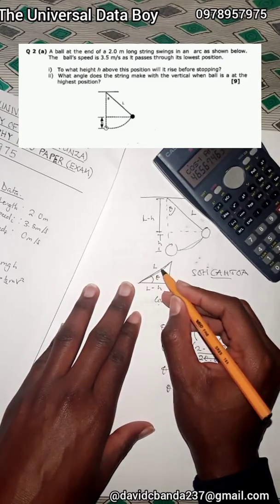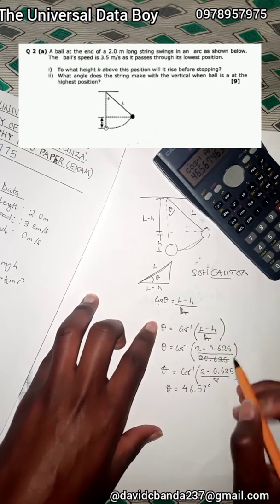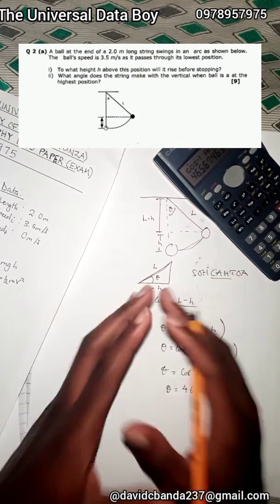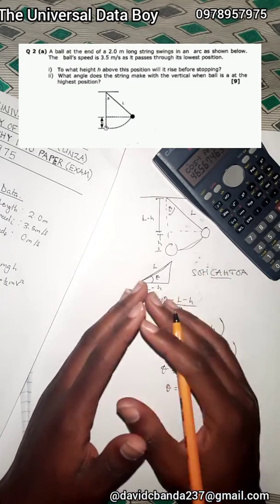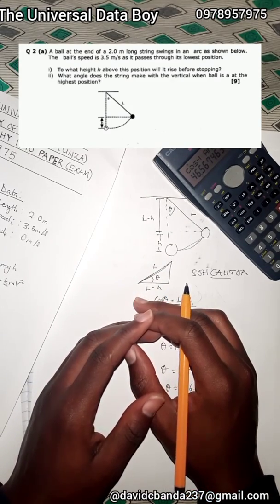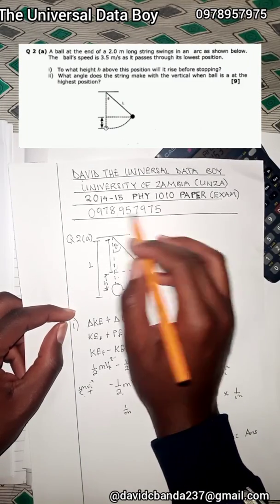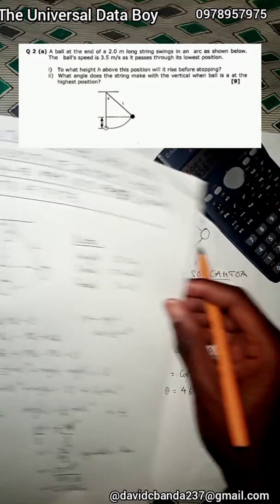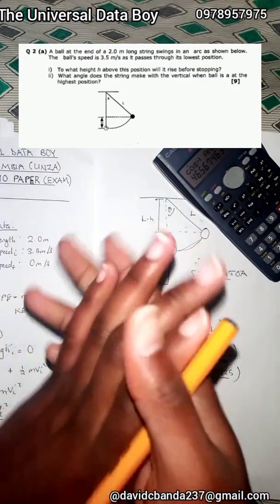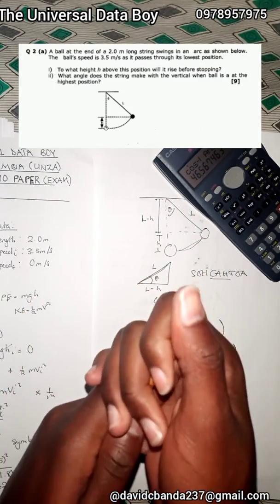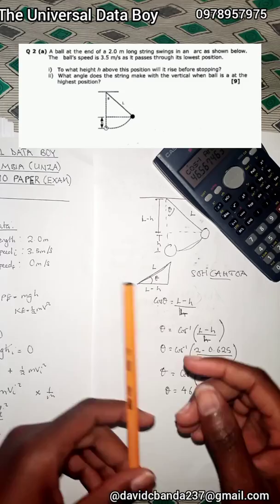Remember: l is the string length, we created our triangle, used SOHCAHTOA, and found theta. This question is very simple and straightforward — just trigonometry and conservation of mechanical energy. Please subscribe to this channel for more questions. If you have any questions, send them to the WhatsApp number shown. The A-Plus Ambassador, David Banda, is solving tutorial sheets. Bye-bye and stay safe.